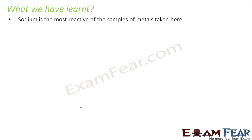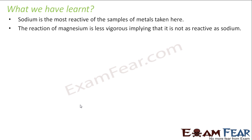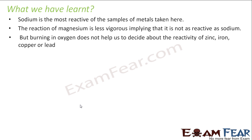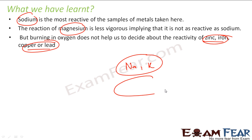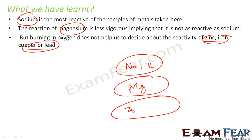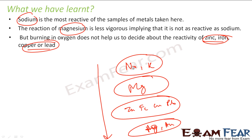Let us also recap the reactivity series we have studied so far. Sodium is the most reactive metal. Magnesium's reaction is less vigorous than sodium. Burning in oxygen did not help us decide the reactivity of zinc, iron, copper, or lead. So far we know: sodium and potassium are at the top, then magnesium in the middle, then zinc, iron, copper, and lead, and finally gold and silver at the bottom. We still need to determine the relative reactivity within the middle group, since oxygen reactions didn't help us differentiate them.